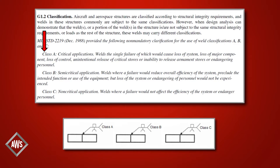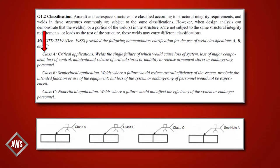Class C is a non-critical application. Class C classifications are given to wells that would not affect the efficiency of the system or endanger personnel if they failed. These classifications must be included in the engineering drawing.